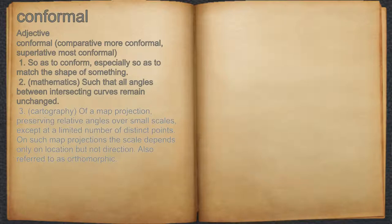3. Cartography, of a map projection, preserving relative angles over small scales, except at a limited number of distinct points. On such map projections the scale depends only on location but not direction. Also referred to as orthomorphic.